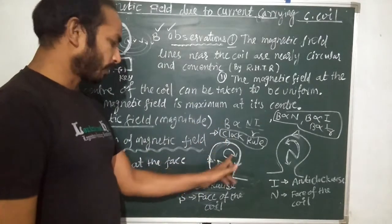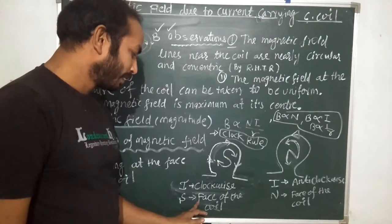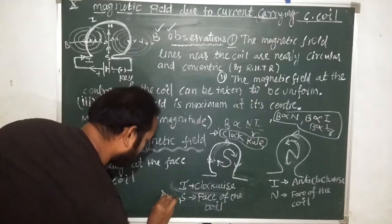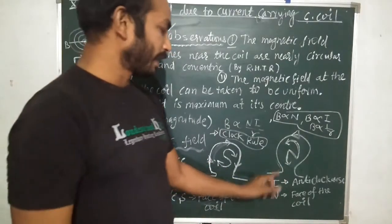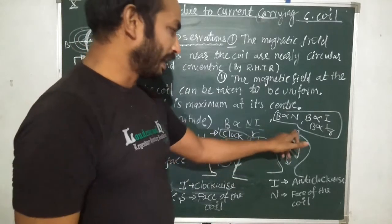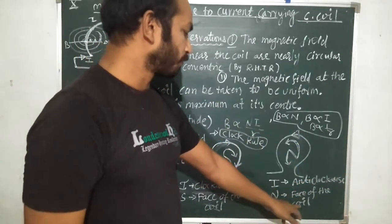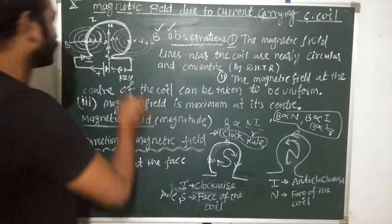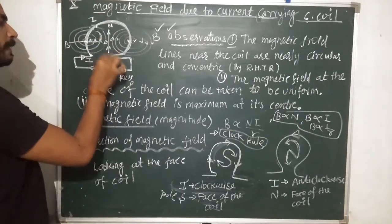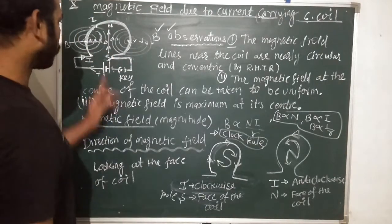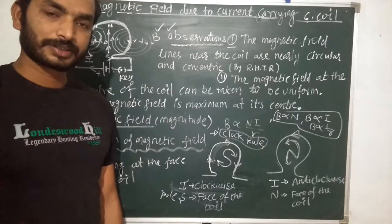When current is flowing in the clockwise direction and you are looking at the front of the coil, the front part of the coil will behave like a south pole of a magnet, and the back side part will behave like a north pole of the magnet. This rule is known as the clock rule.